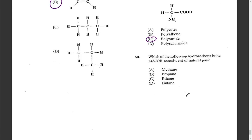Question sixty: which hydrocarbon is the major constituent of natural gas? The answer is methane.